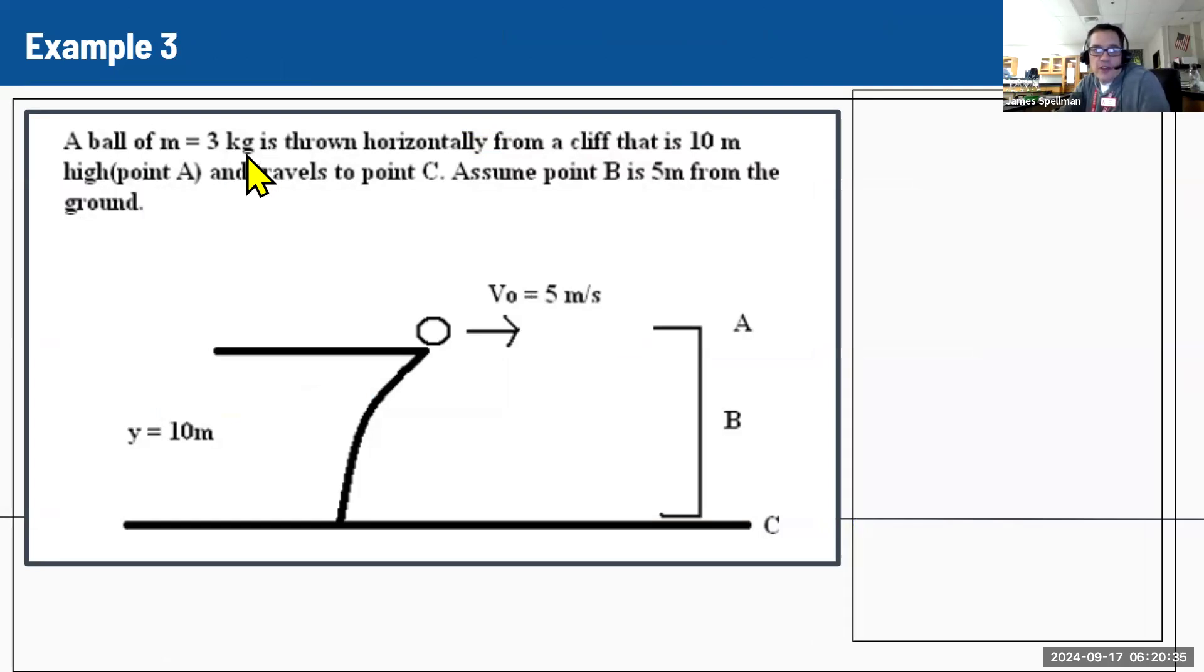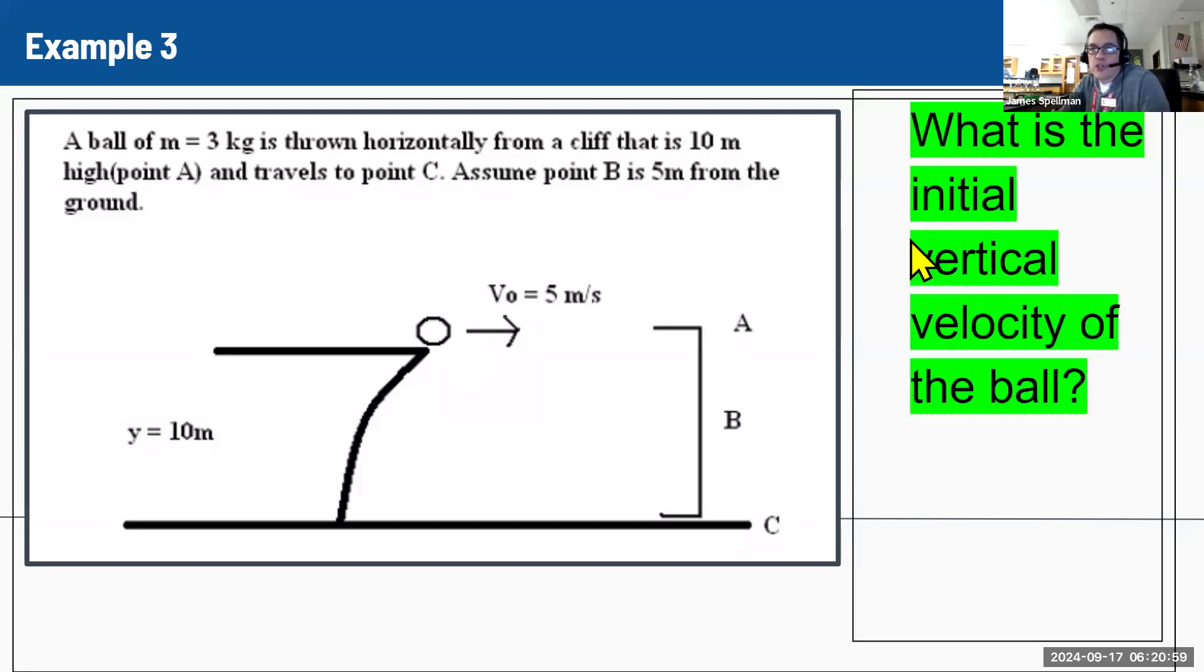So we've got a ball that's got a mass of three kilograms. Hint, this doesn't matter. It's thrown horizontally from a cliff that's 10 meters high. So my distance in the height is 10 meters. And it's going to travel to point C, which means it's going to follow a curve pattern and land down here at C. And if we assume B is halfway, five meters from the ground, that's going to be halfway up and A is going to be all the way to the top.